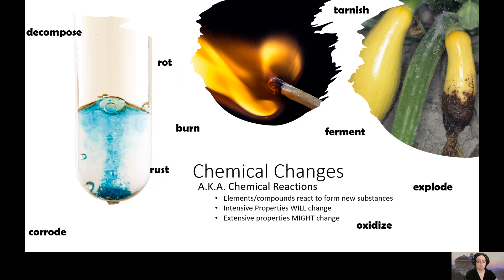Chemical changes, though, are also called chemical reactions. And these are elements, how elements and compounds react to form new substances. Your intensive properties will change and your extensive properties might change. So remember that extensive properties are things like mass, length, width. Intensive properties are things like color, density. And those change because now instead of having a pure substance or a specific compound, you have something new at the end. And so keywords to look for when you're trying to identify chemical change are things like exploding, oxidizing, ferment, decompose, rust, burn, rot, right?